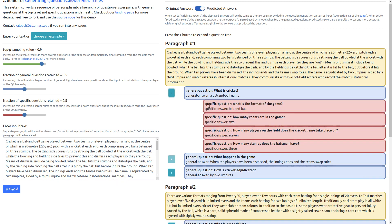And if you drill deeper here, you can see the specific questions which were produced for this paragraph, such as what is the format of the game: bat and ball. How many teams are in the game: two. How many players on the field does the cricket game take place on: 11. And so on and so forth. And this gives you a nice structure for exploring and learning more about this paragraph at your own pace and gives you a nice reference point as well, like starting with a general one and then drilling deeper. So I can see how this could be a very cool approach for enhancing learning of new concepts.